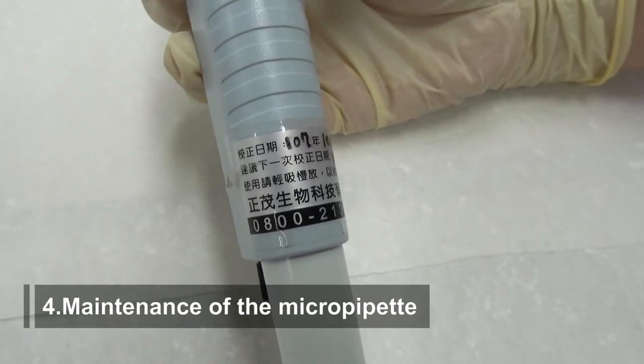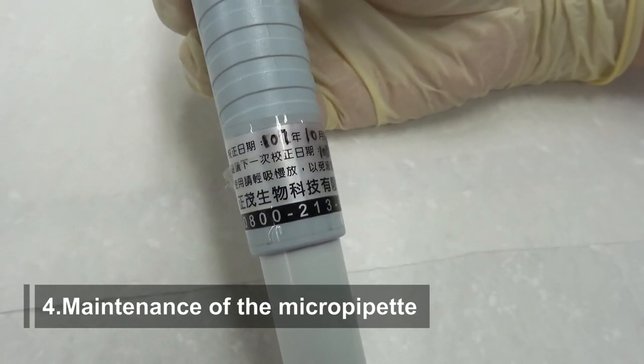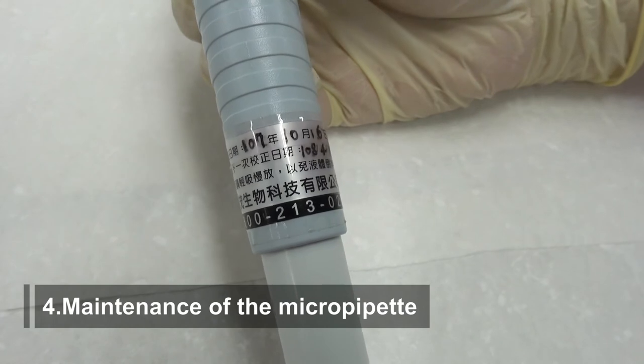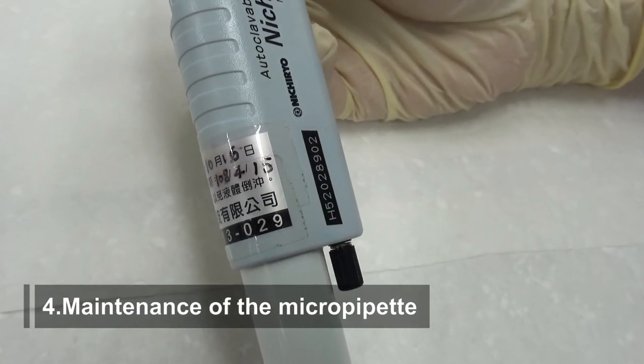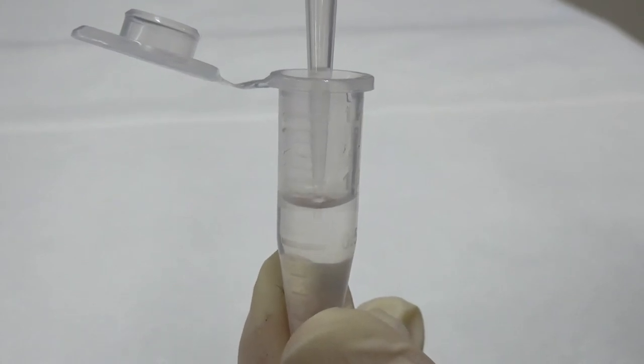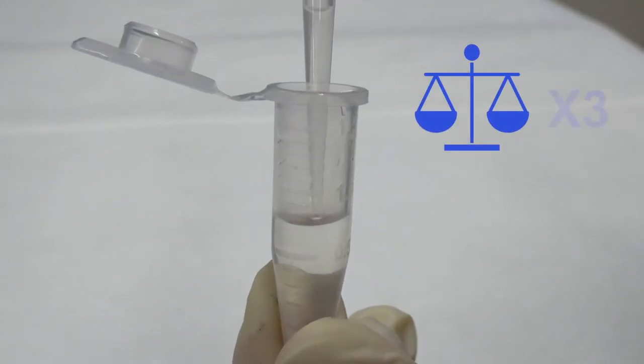Maintenance of the micropipette: The micropipette needs to be calibrated regularly to ensure accuracy and improve experiment reproducibility. A simple approach to check accuracy is to aspirate a certain volume of water and measure the weight. Repeat 3 times and calculate the error.